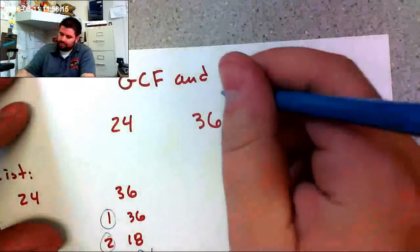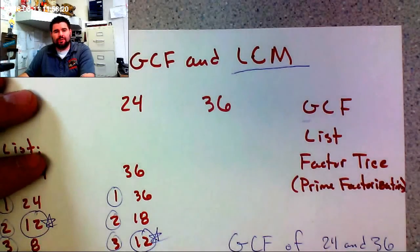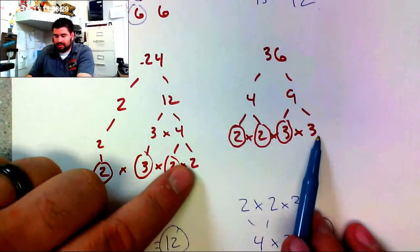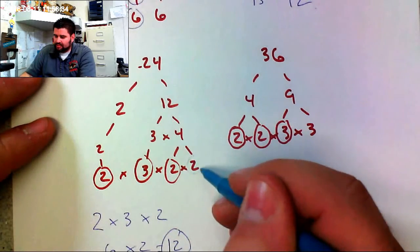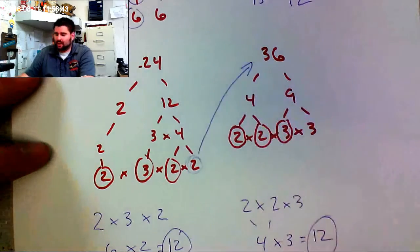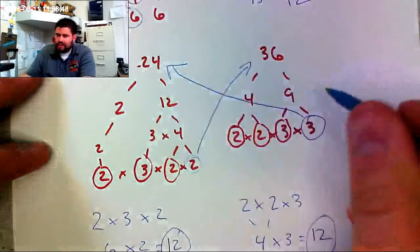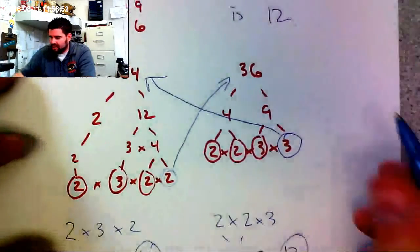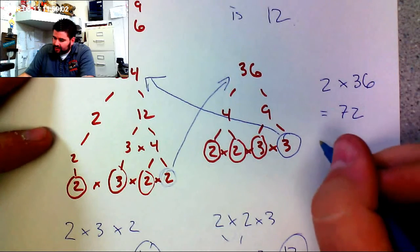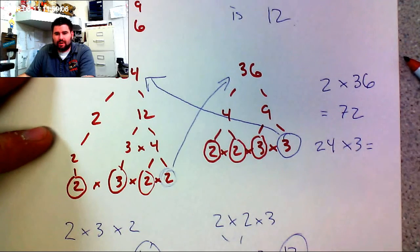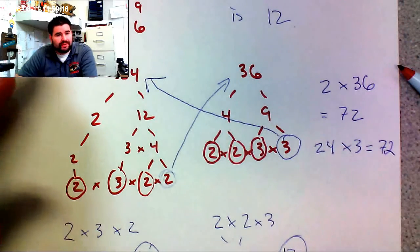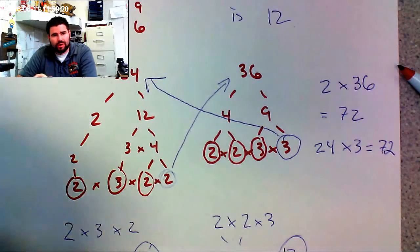Now, the lowest common multiple is a little more difficult with the list, but we can use the factor tree we already made. What you do is take one of the numbers and multiply it by the leftover factor from the other side's prime factorization. For example, multiplying 2 by 36 gives the LCM, and multiplying 24 by 3 also gives the LCM.